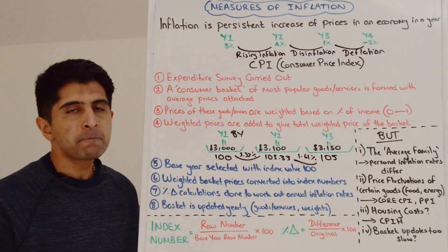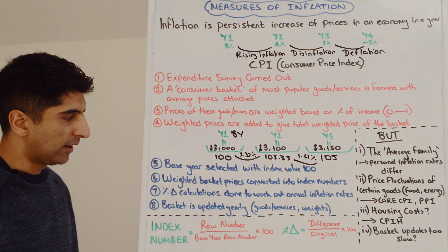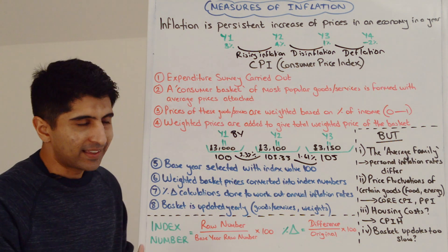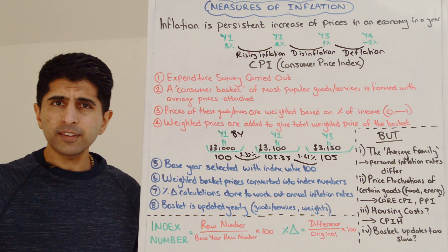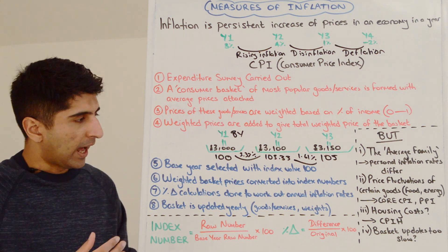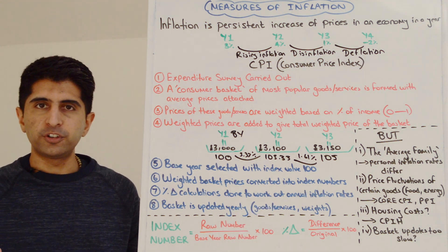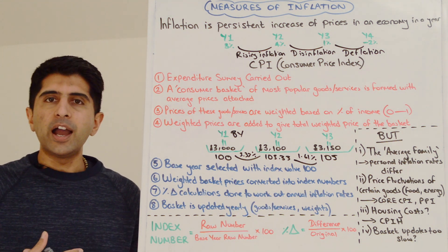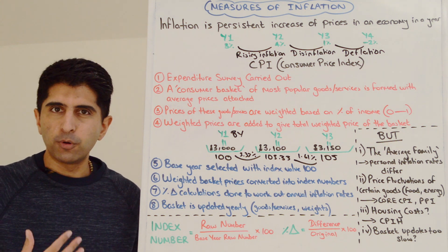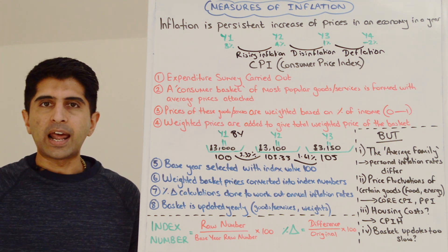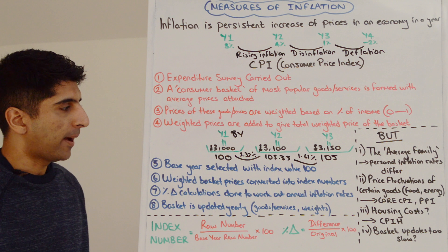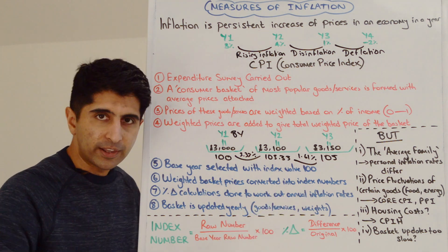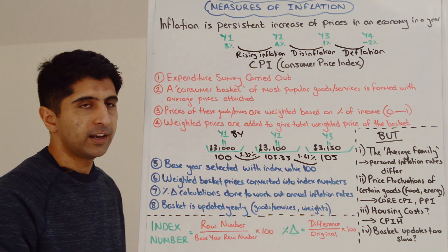The last part of the CPI process is that the basket is updated yearly. Once every year, items in the basket will change — items consumers are not buying as much anymore will leave, and newly popular items will enter the basket. The weights will also adapt. So there are yearly updates to the basket.